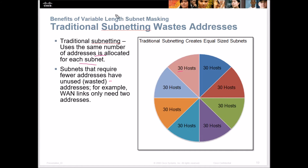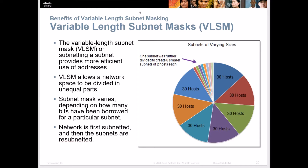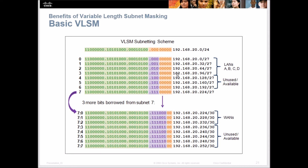So what we do is break that up into variable length subnet mask. We have varying sizes of subnets — we might have 30 here, 30 here, but only need eight or two in others. We can have eight subnets with two each, giving us multiple subnets. We do that by breaking them up a little piece at a time.